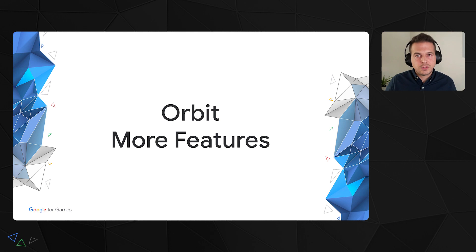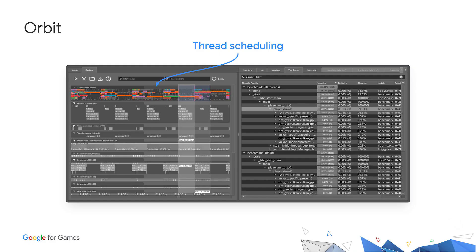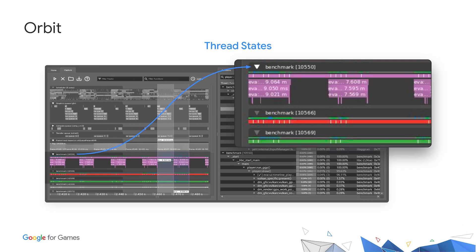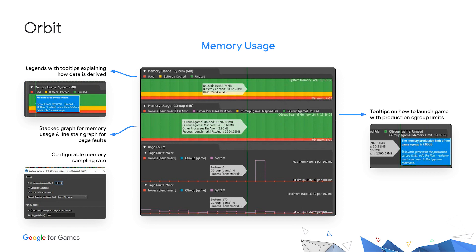Now that we've covered the core functionality of Orbit, let's look at some other features. In the capture view, the first track you will encounter is the scheduler track. At a glance, you get an idea of your core occupancy, and you can easily see what core your threads were running on and visualize context switches. Related to scheduling, we show thread states right above the sampling bar in the thread state bar. A thread that is running is shown in green; runnable but not scheduled is shown in blue; sleeping is shown in gray. You can hover over different sections of the thread bar to get a description of the thread state.